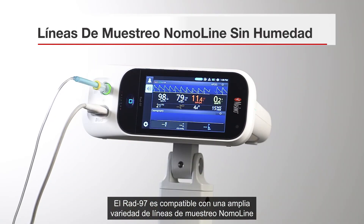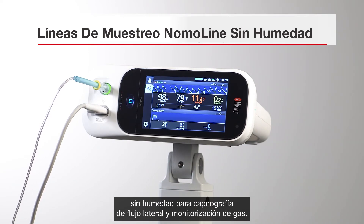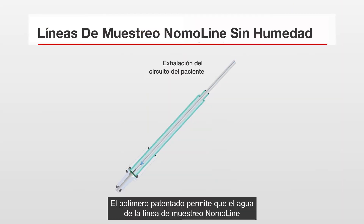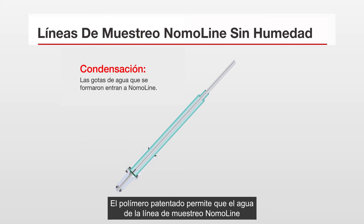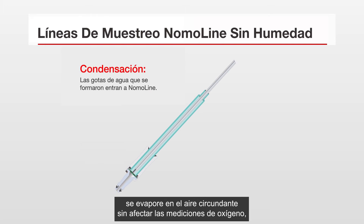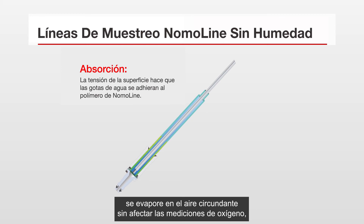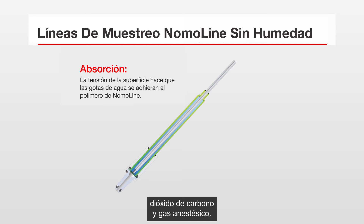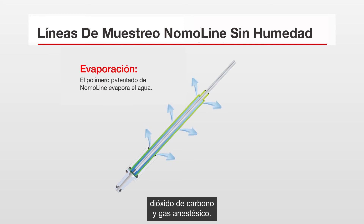RAD97 is compatible with a wide variety of NomaLine no-moisture sampling lines for sidestream capnography and gas monitoring. A patented polymer allows water in the NomaLine sampling line to evaporate into the surrounding air while leaving oxygen, carbon dioxide, and anesthetic gas measurements unaffected.